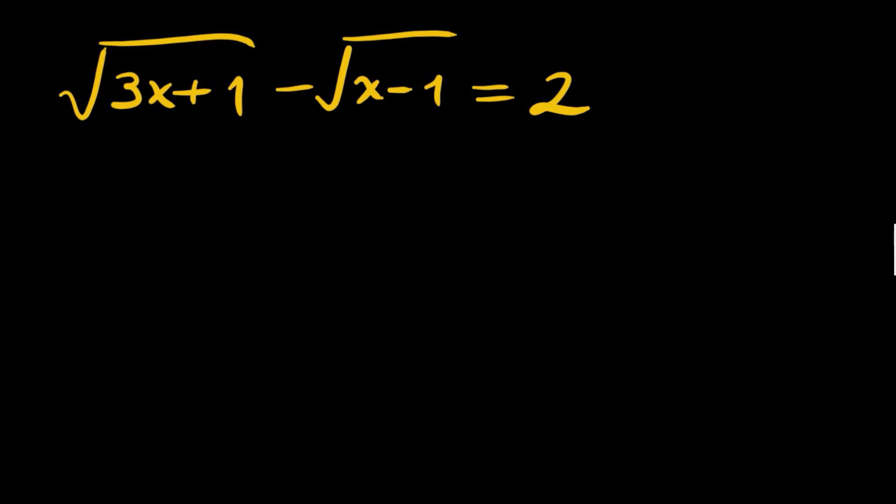Now before squaring both sides, let's have one of our roots on the other side and write this as root x minus 1 plus 2, and let's square both sides.